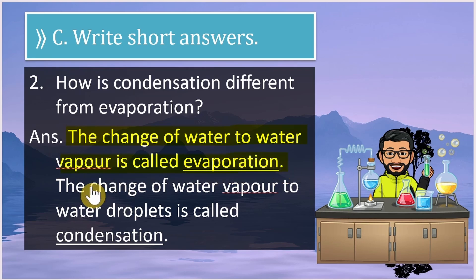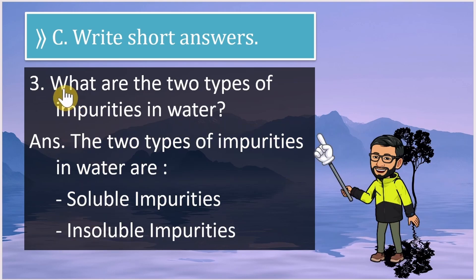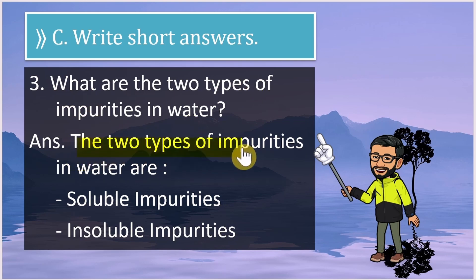Question 2: How is condensation different from evaporation? The change of water to water vapor is called evaporation. The change of water vapor to water droplets is called condensation. These are two different phenomena.